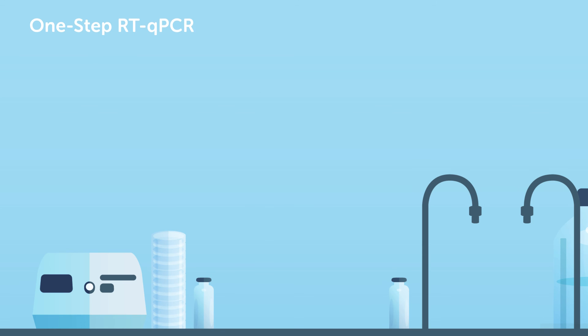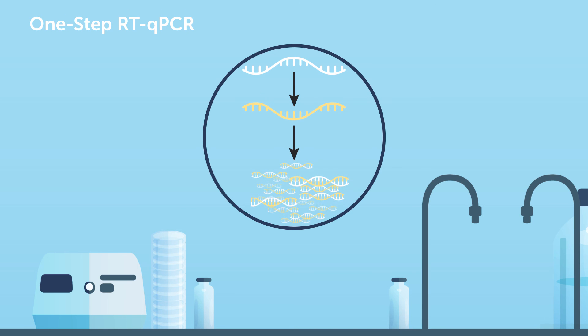One-step RT-qPCR is performed with gene-specific primers for both reverse transcription and amplification. While offering the convenience of performing both steps in the same reaction tube saves you time and pipetting steps, you lose the ability to analyze multiple transcripts from a single cDNA synthesis.